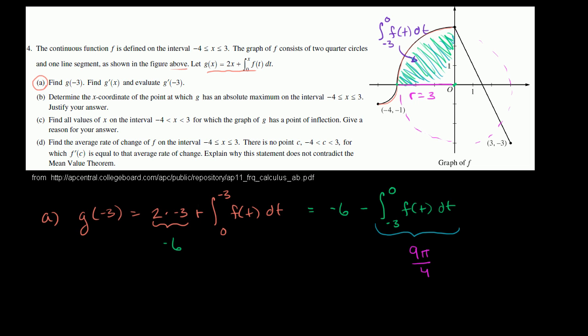So part A, we get, it's equal to -6, that's that right over there, minus 9π/4. And that's at least the first part of part A. Then they say find g'(x).